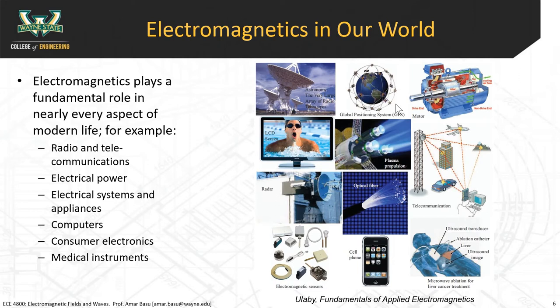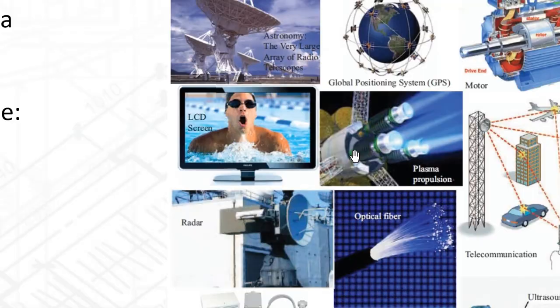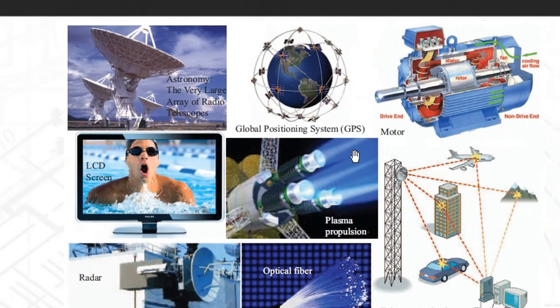There are a lot of aspects to this picture, but you can see the major areas of electromagnetics. One is electromagnetic waves and fields, which is widely used in astronomy and wireless communication.